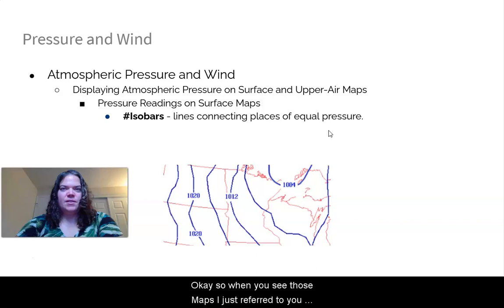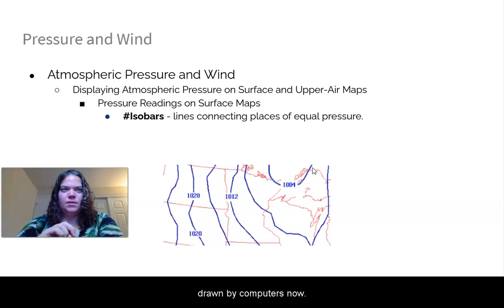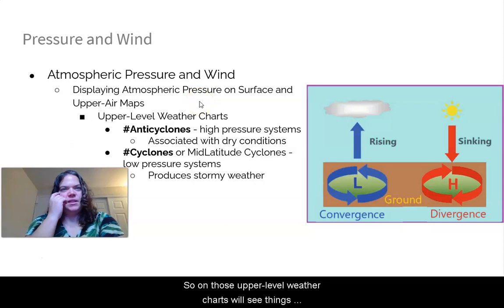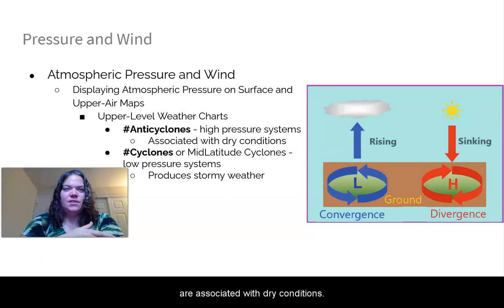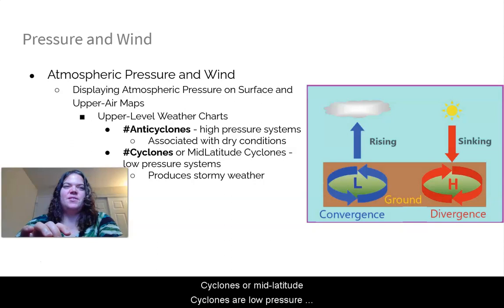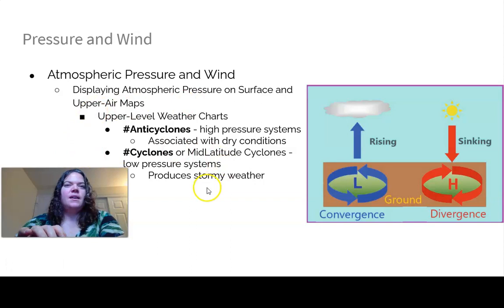So when you see those maps, you might see these squiggly lines. The squiggly lines are called isobars. Isobars are lines of connected equal pressure. So everywhere along this line is 1004 millibars. So that's been drawn by computers now, but it used to be drawn by hand. On those upper level weather charts, we'll see things called anti-cyclones. These are high pressure systems. They are associated with dry conditions. And then cyclones or mid-latitude cyclones are low pressure systems, and they produce stormy weather.